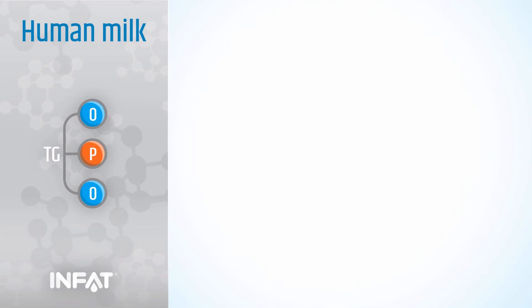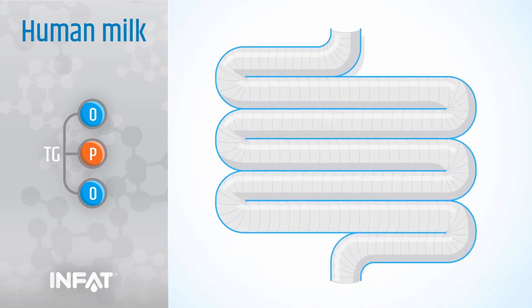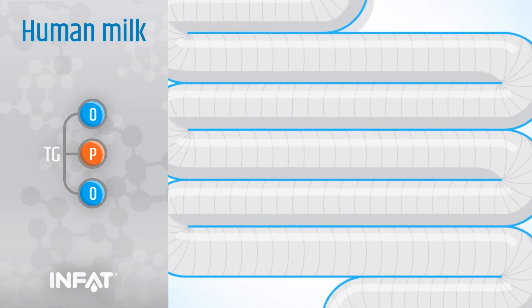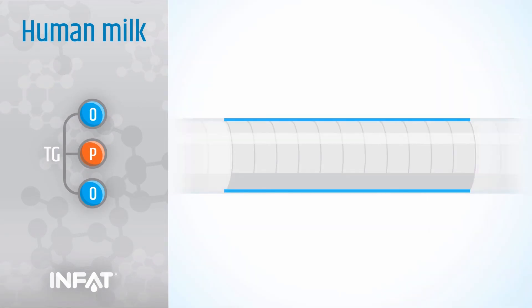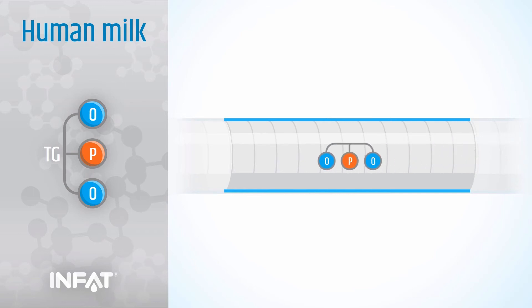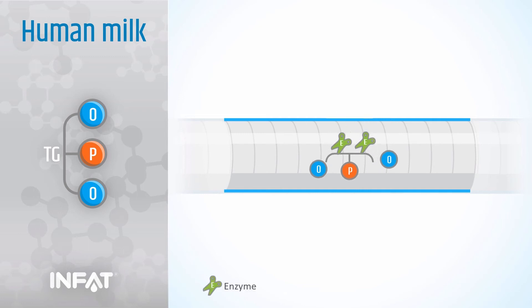This short animation depicts a model of the baby's intestine and the digestion of fat. In breast milk, the palmitate is usually located on the second position of the triglycerides. When this molecule reaches the intestines, it is cleaved by an enzyme.